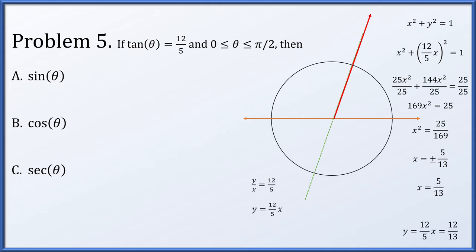What about y? We already know it to be (12/5) times x, meaning y = 12/13. The sine of the angle is the y coordinate, which we found to be 12/13. The cosine of theta is the x coordinate, which we found to be 5/13. And the secant of theta is 1 over the x coordinate, so we simply reciprocate the cosine and get 13/5.